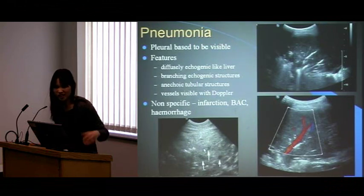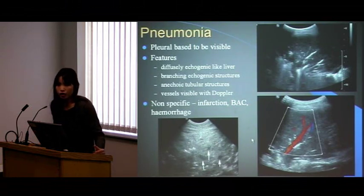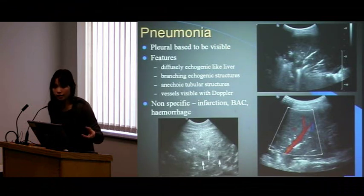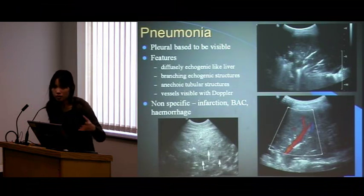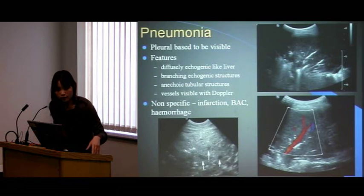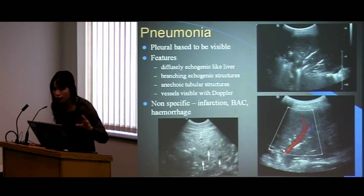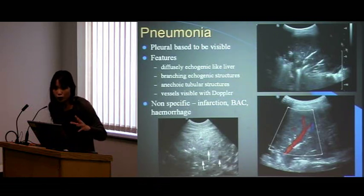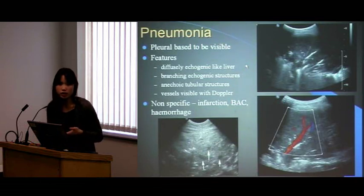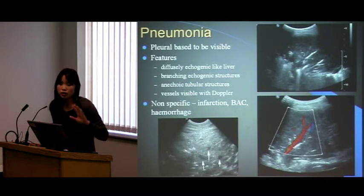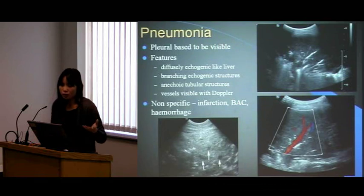Anything air-filled will be bright, and the bronchioles will be branching. You might also see anechoic tubular structures — dark circles or tubes — which could be vessels or fluid-filled bronchi, suggesting mucus plugging or something more proximal obstructing. Pop the Doppler on to differentiate vessels from fluid-filled bronchi. The appearance of consolidated lung is not specific: it could be infection, infarction after PE, bronchoalveolar cancer, or hemorrhage — but most commonly infection.